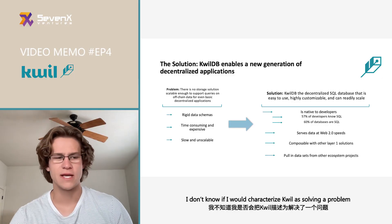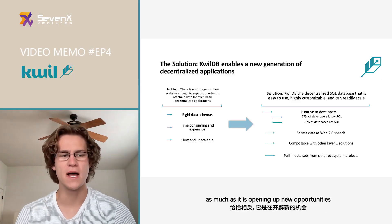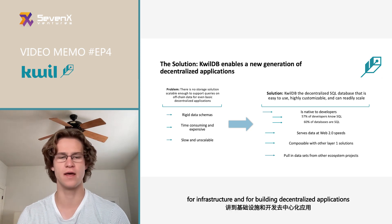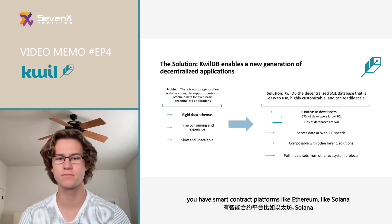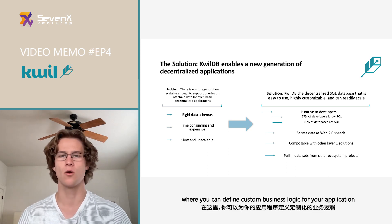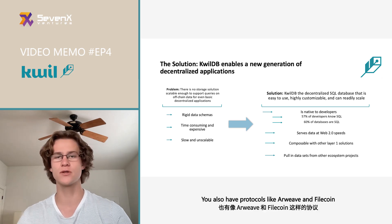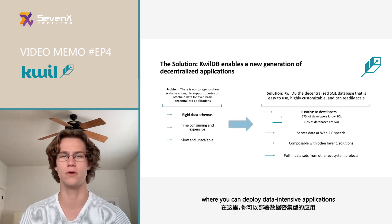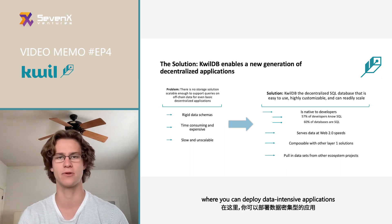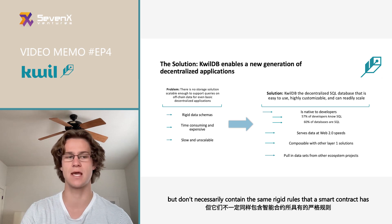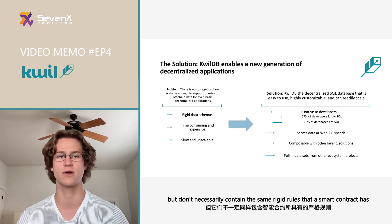I wouldn't characterize Quill as solving a problem so much as opening up new opportunities. Right now in Web3, for infrastructure and for building decentralized applications, you have smart contract platforms like Ethereum and Solana, where you can define custom business logic, deploy it, and people can interact with that permissionlessly. And then you have protocols like Arweave and Filecoin, where you can deploy data-intensive applications containing a very large amount of data, but without the same rigid rules that a smart contract has.